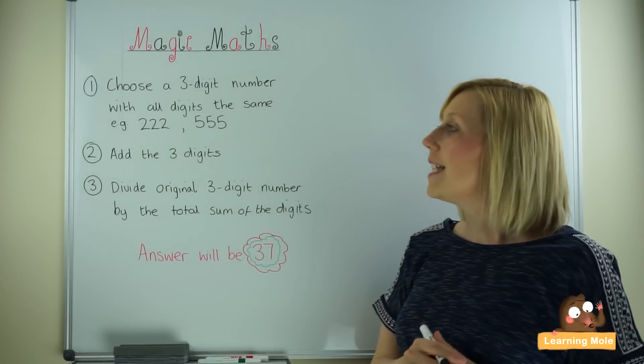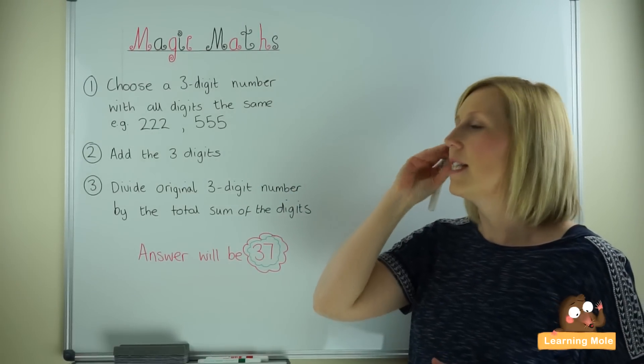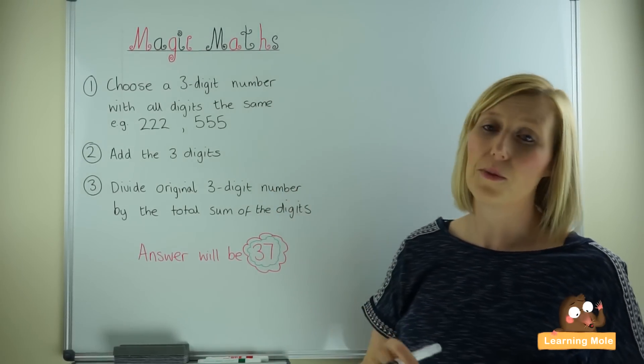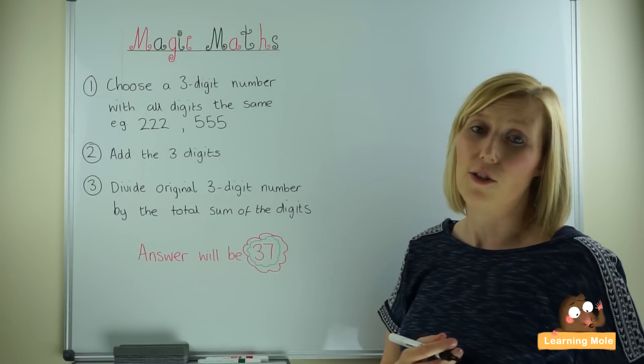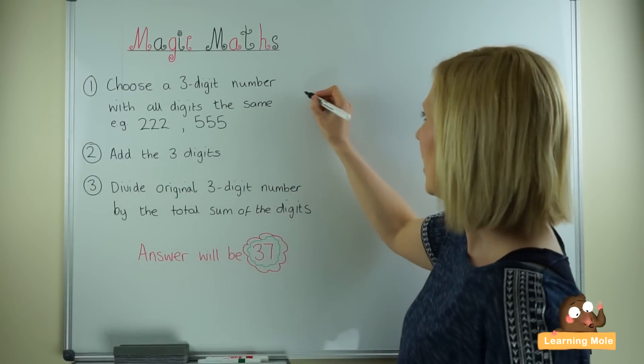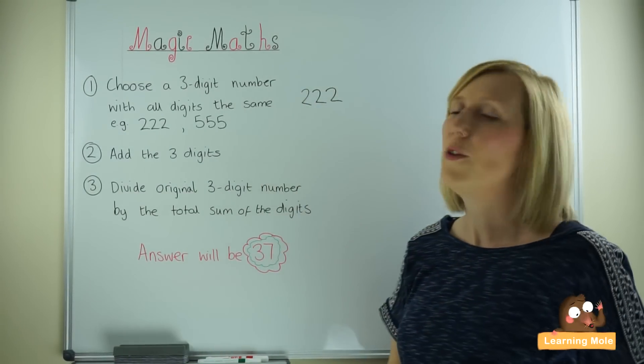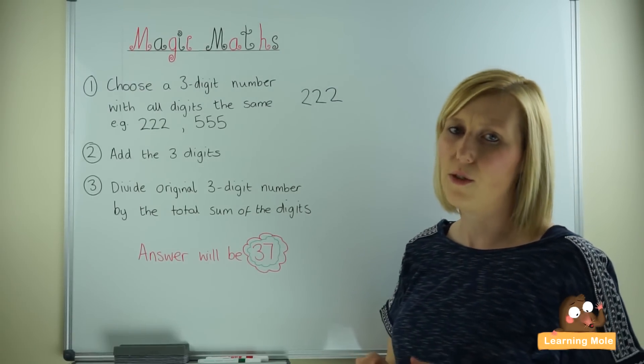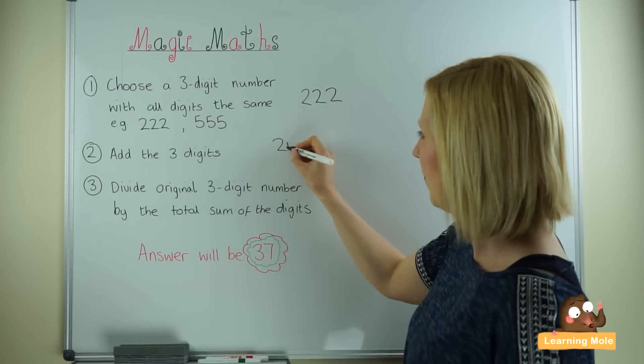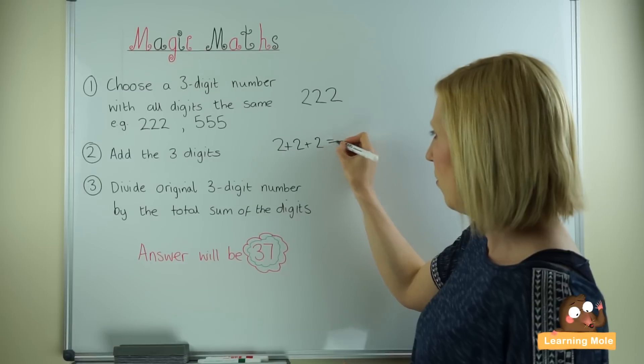Choose a three-digit number with all the digits the same - for example, 222 or 555. I'm going to choose 222. You add the three digits, so you're finding the sum of the three digits: 2 plus 2 plus 2, which is of course 6.